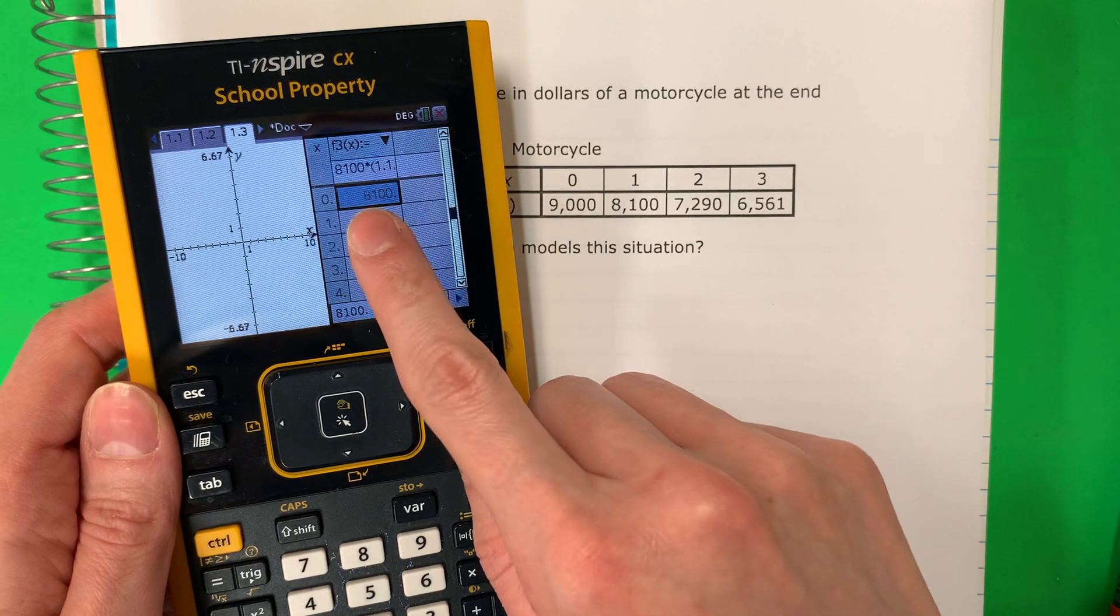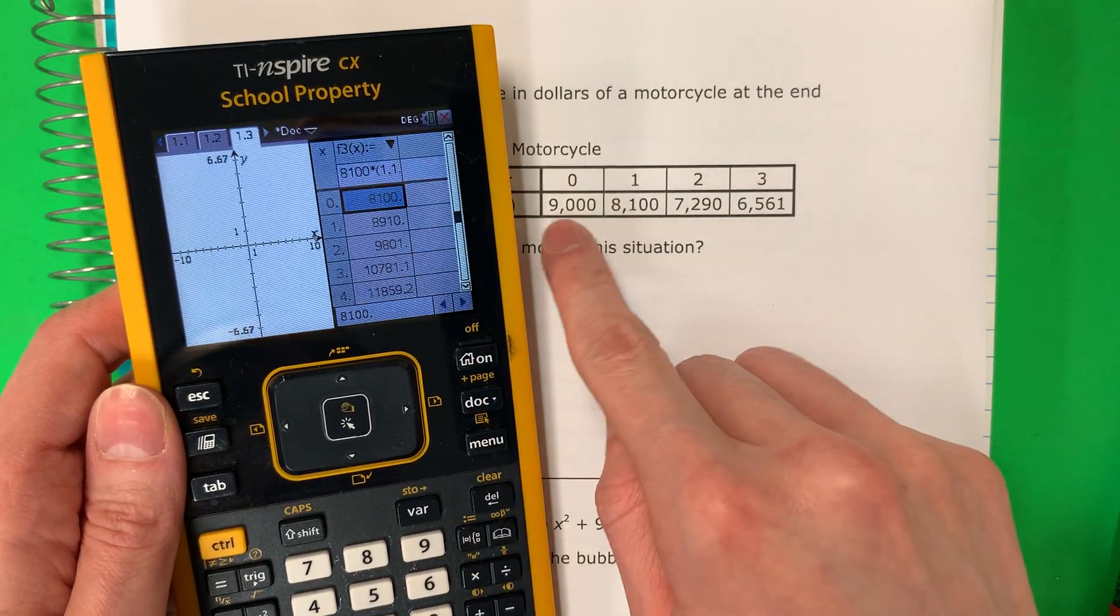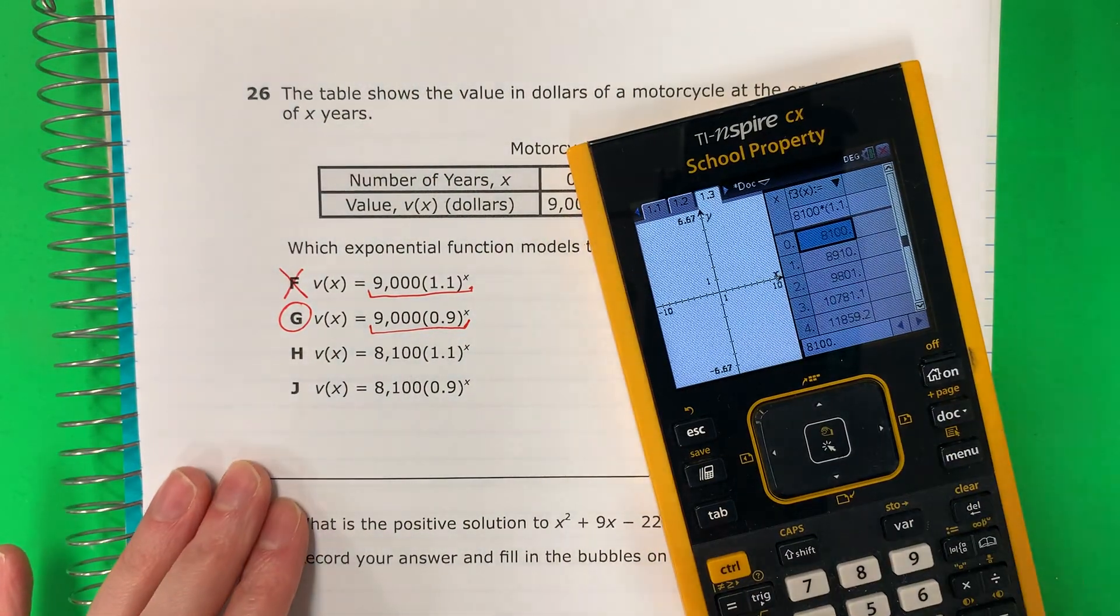This is different. Aquí hay 8,100. And here 9,000. 9,000. So this is not the same. No es igual. So H is not correct.